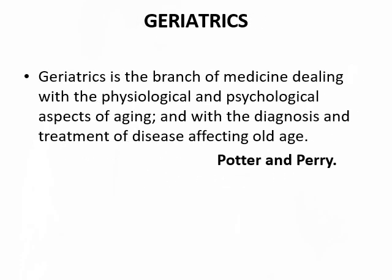What is geriatrics? Geriatrics is a branch of medicine which deals with the physiological and psychological aspects of aging and with diagnosis and treatment of diseases affecting old age. This definition is also given by Potter and Perry. You should know the difference: gerontology refers to all the changes which happen during aging, while geriatrics is a field which deals with the diagnosis and treatment of diseases due to old age.